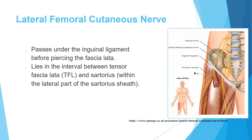One of the commonly asked questions in the exam is the lateral femoral cutaneous nerve. This is a cutaneous nerve from the lumbar plexus. It passes under the inguinal ligament and then pierces the fascia lata to become a cutaneous nerve. It lies between the sartorius and the tensor fascia lata muscle, and in the upper part of the thigh it lies within the lateral part of the sartorius sheath. It is important because it comes into play in the anterior approach of the hip.